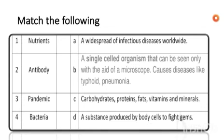In the next match the following, you have to match the pairs. Nutrients are carbohydrates, proteins, fats, vitamins, and minerals — option C. Antibodies, which we saw while discussing diseases, are a substance produced by the body cells to fight germs — option D.